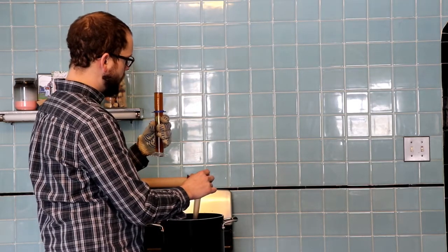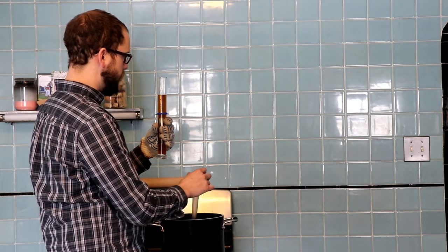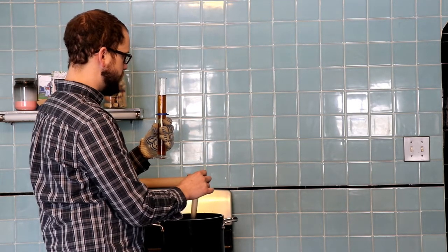So we're reading about 55 brix, which puts us realistically at about 62, which is really close to where we want to get. So we're going to keep a good eye on it now and make sure it doesn't run away from us.